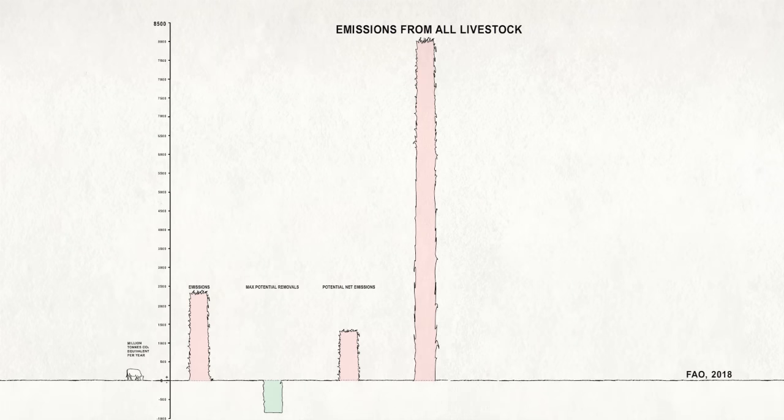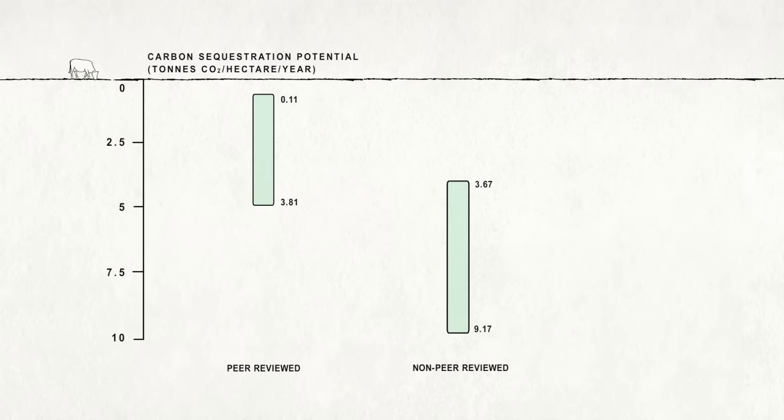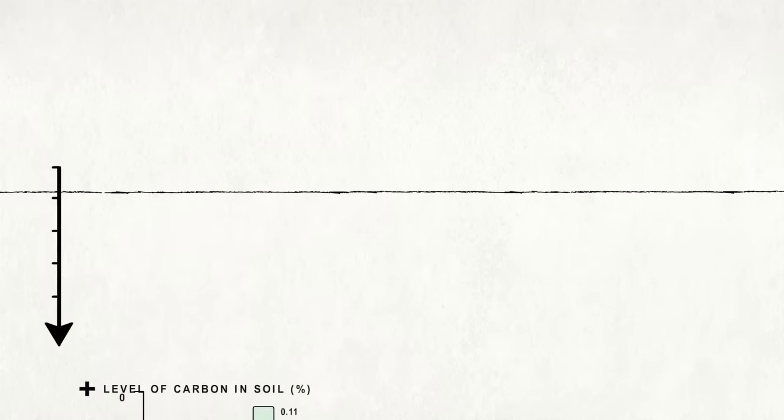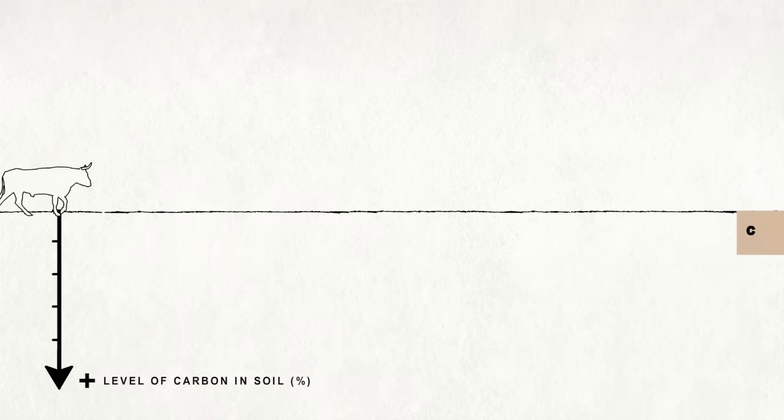In some specific contexts, where the climate, soil, land use history and grazing management are just right, additional carbon can be removed from the atmosphere and sequestered in soils. But realistic rates for this are far below those claimed outside of the scientific literature. And only rarely can sequestration outweigh the greenhouse gas emissions from grazing animals living on the land.